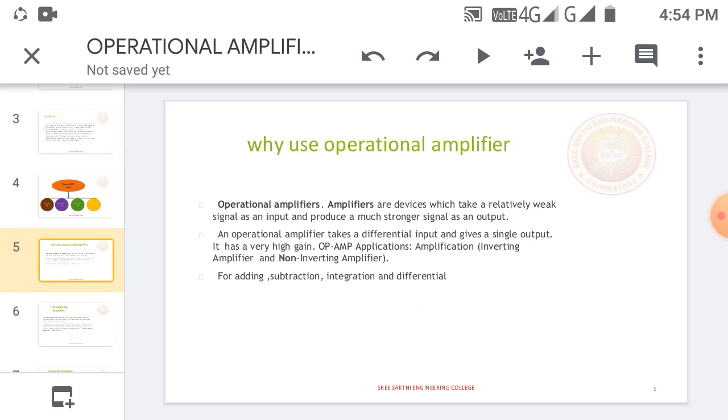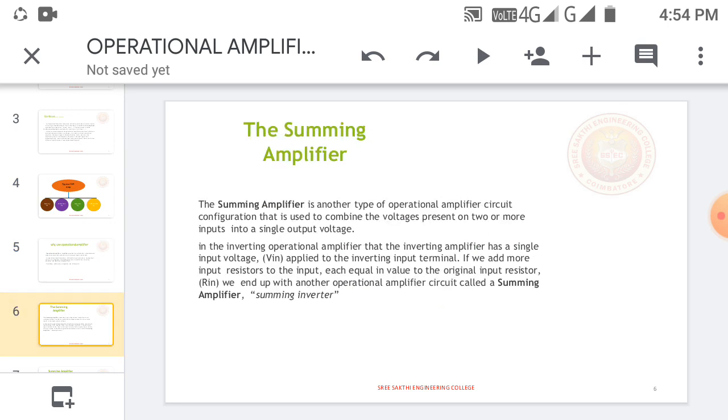Why do we use operational amplifiers? We can take weak signals and produce strong signals. Operational amplifiers can amplify the signal with high gain. We can get either an inverting or a non-inverting output. It can be used for addition, subtraction, and differentiation.